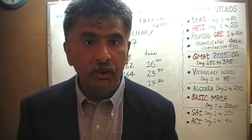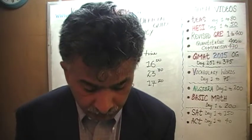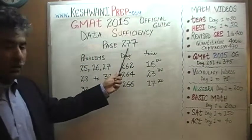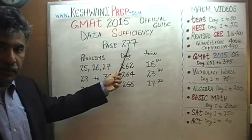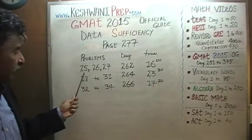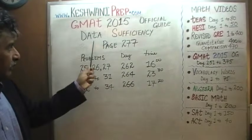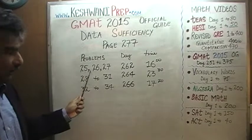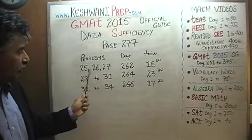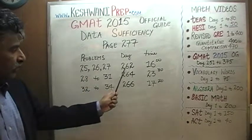I am simply going to tell you where you will be able to find solutions to a given problem. You will be looking at all the data sufficiency problems appearing on page number 277. You will find the solutions to data sufficiency problems number 25, 26, and 27 on day number 262.